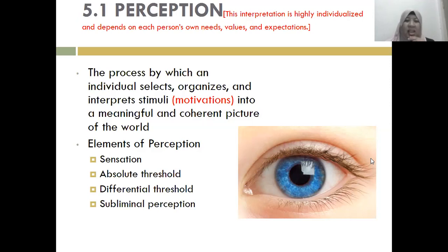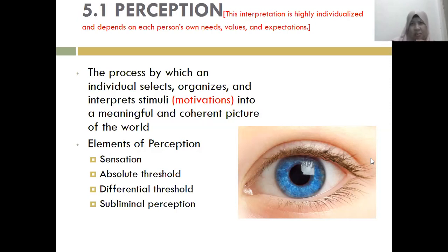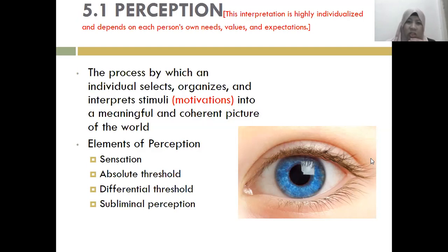As you can see, the red statement there says: 'This interpretation is highly individualized and depends on each person's needs, values, and expectations.' That's why different people have totally different perceptions. From the textbook definition: perception is the process by which an individual selects, organizes, and interprets stimuli into a meaningful and coherent picture of the world.